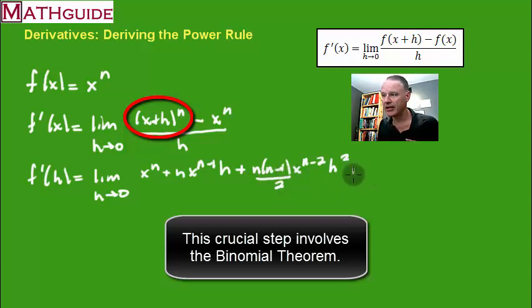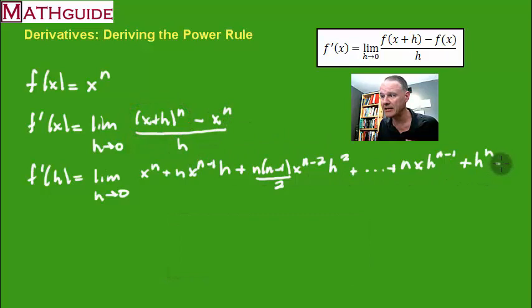Okay, and so on. We're going to keep going down the list all the way to plus n x h to the n minus 1. And finally, the last term would be h to the n. Okay, that's what you would get when you expand this. You get this really long polynomial. Then we have this minus x to the n. All of it is over h.